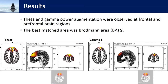This theta and gamma power augmentation was observed at the frontal and prefrontal brain areas. More specifically, the best match area was Brodmann area 9. The S-Loreta 3D brain maps show theta on the left-hand side, coming from both sides but mainly the frontal and prefrontal areas. A similar brain area of activation for gamma 1 is shown in the right-hand side pictures.